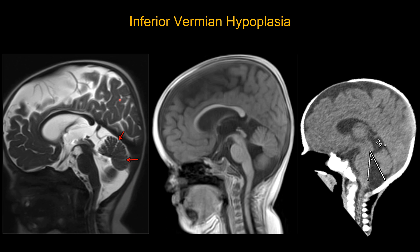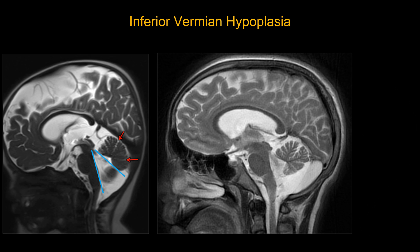Here's another example of inferior vermian hypoplasia with T2-weighted, T1-weighted, and corresponding CT images showing a measurement of 34 degrees TV angle. Compare that to this entity where the TV angle is not abnormally widened. There is enlargement of the cystic space inferior to the vermis, but the inferior vermis does not appear significantly smaller than the other two sections. There is mild mass effect on the inferior vermis and mild hydrocephalus, making this one Blake's pouch cyst.